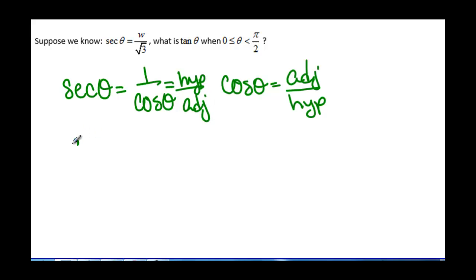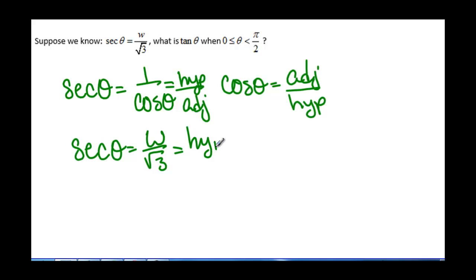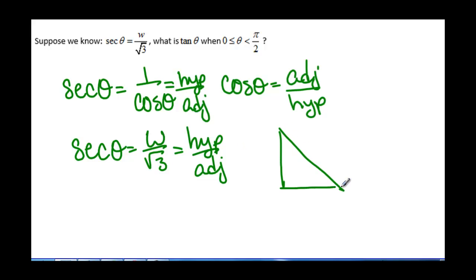So if we have secant of theta equals w over square root of 3, which is equal to the hypotenuse over adjacent, then we can say that w is the hypotenuse and square root of 3 is the adjacent side to the angle theta.